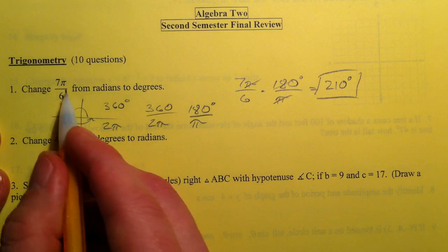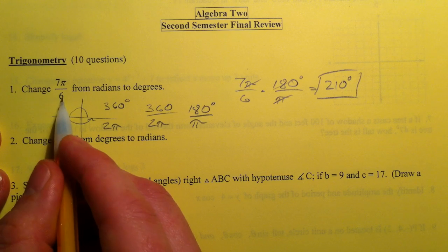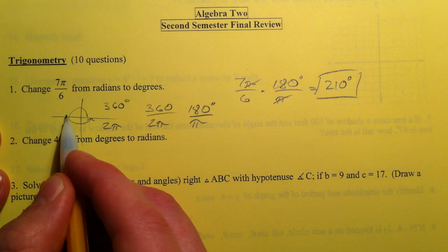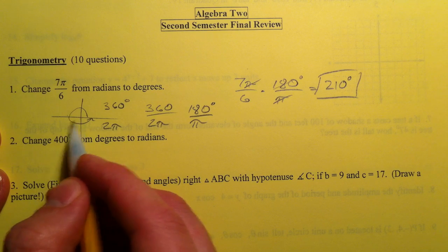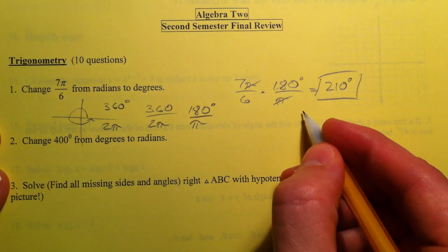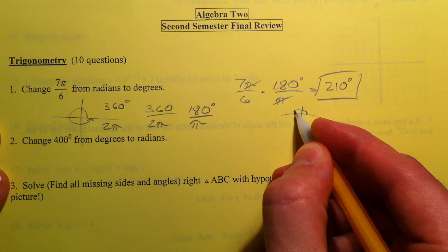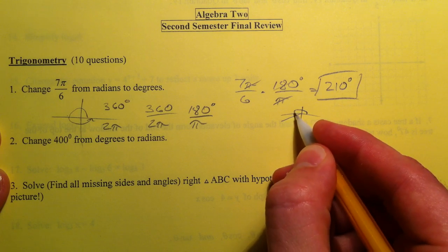You can also think, okay, 7π over 6. I know the over 6s are the 30s, and then we have one more than 6π over 6, and so it's 210, which would be right here, about.